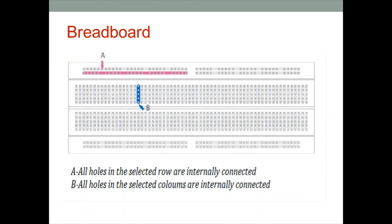This breadboard is used for temporary connections. All the holes shown in pink color are internally connected. The breadboard is made of plastic material; if you remove the plastic, conducting plates are underneath. Two columns are internally connected as one group. The blue-colored strip represents a whole column, and sets of 5 holes are internally connected. If you understand the breadboard construction, making connections will be easy.